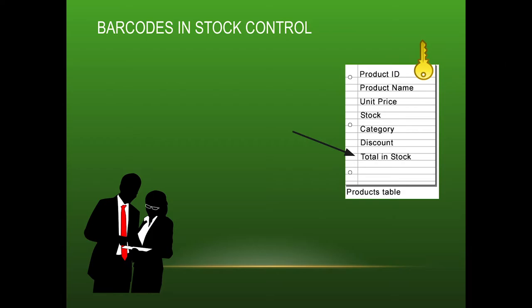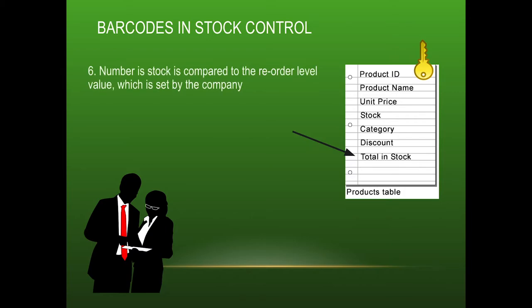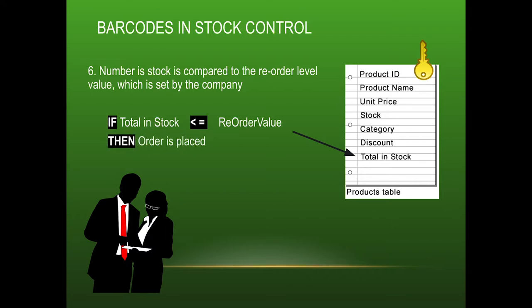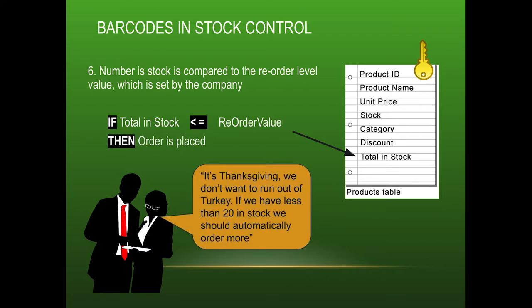Once an item has been deducted from the stock level, another process handles reordering. The company sets a reorder level — for example, 20. If the total in stock, after deducting what's been bought, is less than or equal to that reorder value, an order will be placed. This is very useful for companies to ensure they always have the products customers need, keeping customers satisfied.